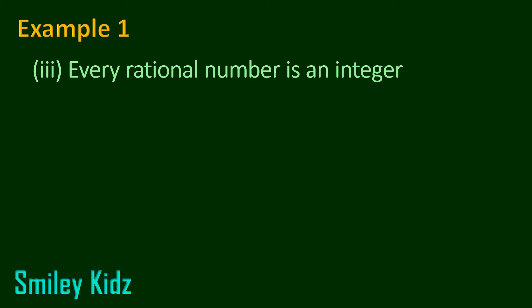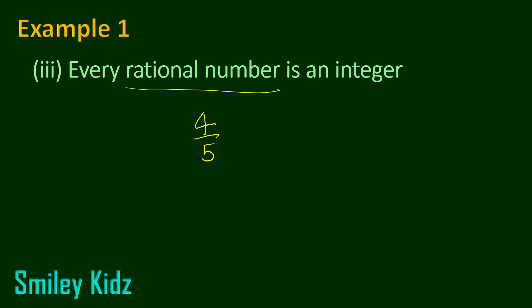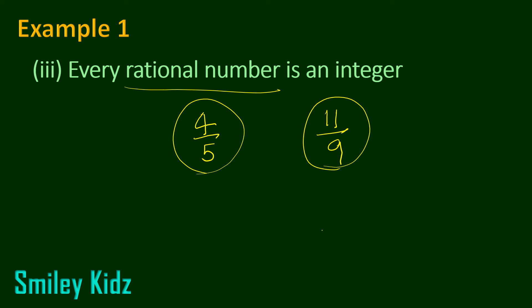Then we move on to the third statement: every rational number is an integer. We have seen that every integer is a rational number — but is it vice versa? Let's take an example of a rational number: 4 by 5. This is a rational number — is it an integer? No. Let's take 11 by 9 — it is a rational number, but is it an integer? No. Let's take minus 19 by 20 — this is a rational number, but is it an integer? No.